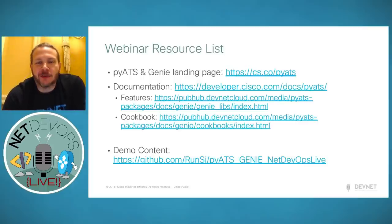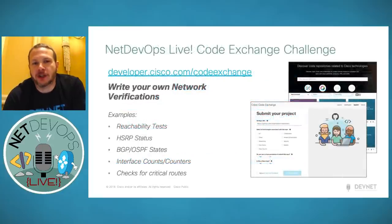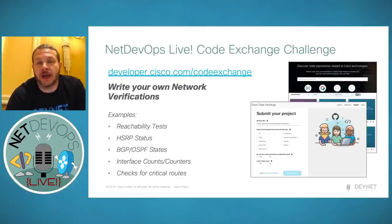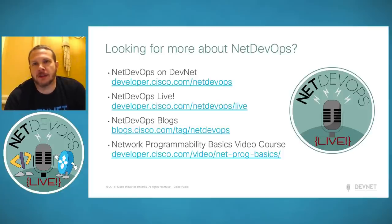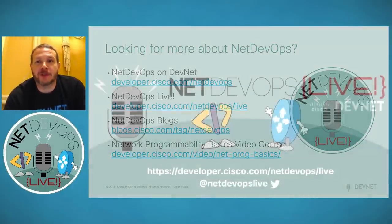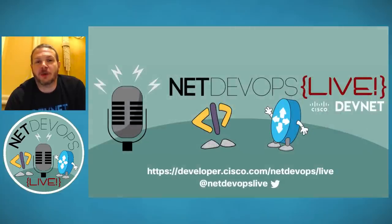Thanks so much, Simon. We went through a ton of really good content. Hopefully everybody's starting to get a grasp of the power of PyATS and Genie for network verification and validation. We'll give you a code exchange challenge — take some of what you learned today and start with Genie CLI as an easy way to get going and write some verifications. We've got examples around reachability or HSRP. Don't forget all the great resources on DevNet around NetDevOps — the blogs, videos, and courses available. We're constantly adding more material. Be sure to join us next week for our video session continuing season two. Thanks everybody for joining us today.